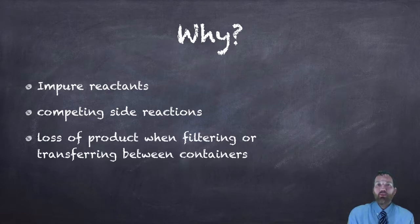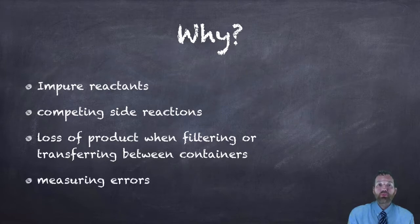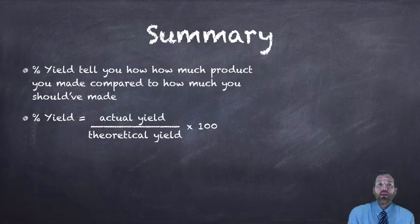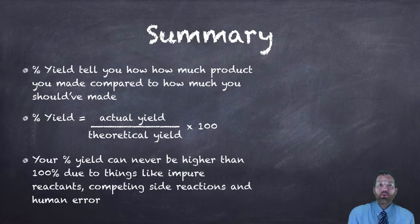You also have loss of product that can happen when filtering or transferring between containers — you may lose some product or it might not all come out of the beaker. There can also be measuring errors depending on how accurate your equipment is. In summary, the percent yield tells you how much product you made compared to how much you should have made — how efficient the reaction or the student was. The percent yield formula is one you need to know and use. Remember, your percent yield can never be higher than 100% due to impure reactants, competing side reactions, and human error.